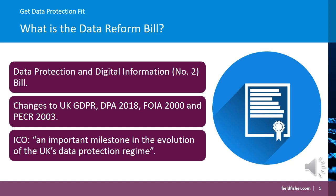The government expects the reforms proposed in the bill to unlock £4.7 billion in savings for the UK economy over the next 10 years, to introduce a simple, clear and business-friendly framework, to support international data sharing, and to remove unnecessary paperwork. The ICO has described the bill as an important milestone in the evolution of the UK's data protection regime.